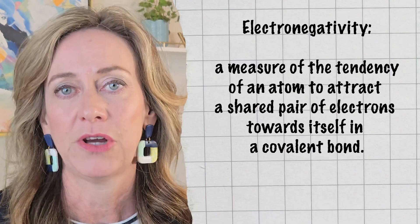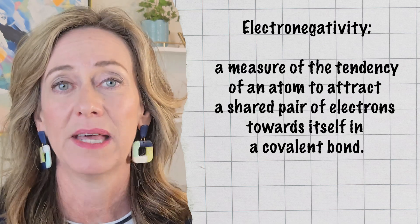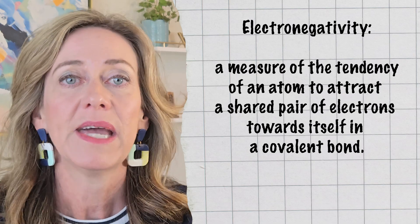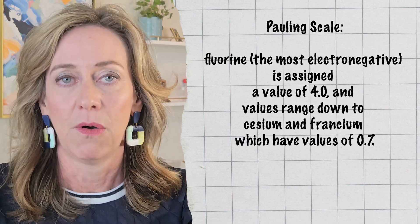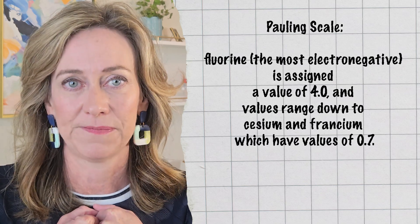Electronegativity is a term that describes an atom's ability to attract electrons toward itself in a chemical bond — like its magnetism or pull for electrons. We use the Pauling scale to measure electronegativity, named after the brilliant chemist Linus Pauling. The scale ranges from 0.7 to 4, with fluorine having the highest value as the most powerful electron attractor. Across the periodic table, electronegativity generally increases from left to right and from bottom to top, because atoms closer to fluorine — which sits at the top right corner — tend to have higher electronegativity values.